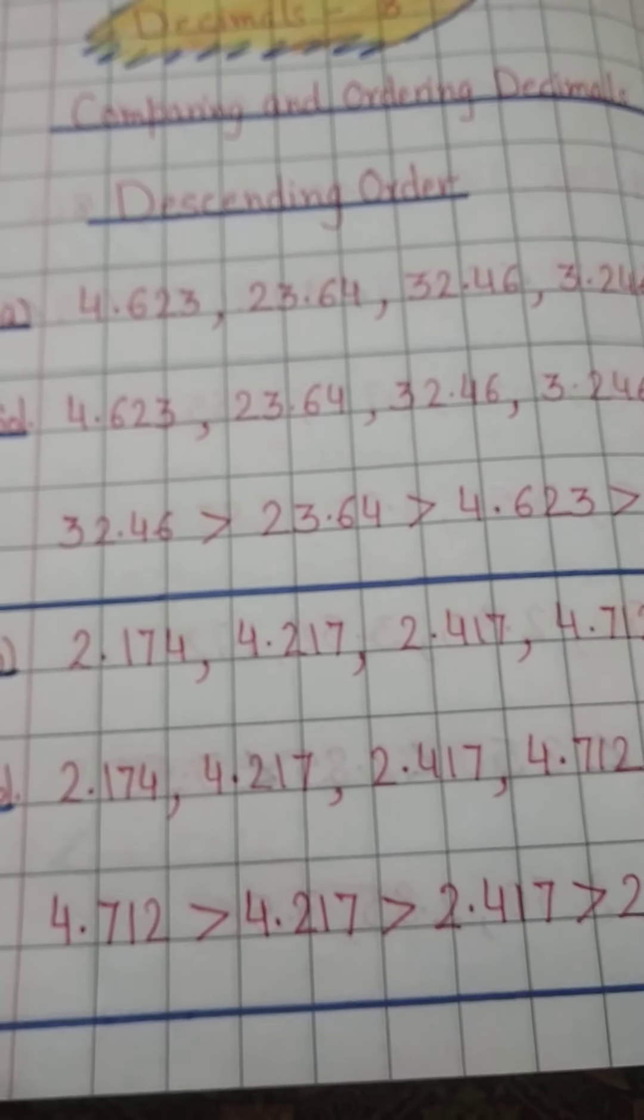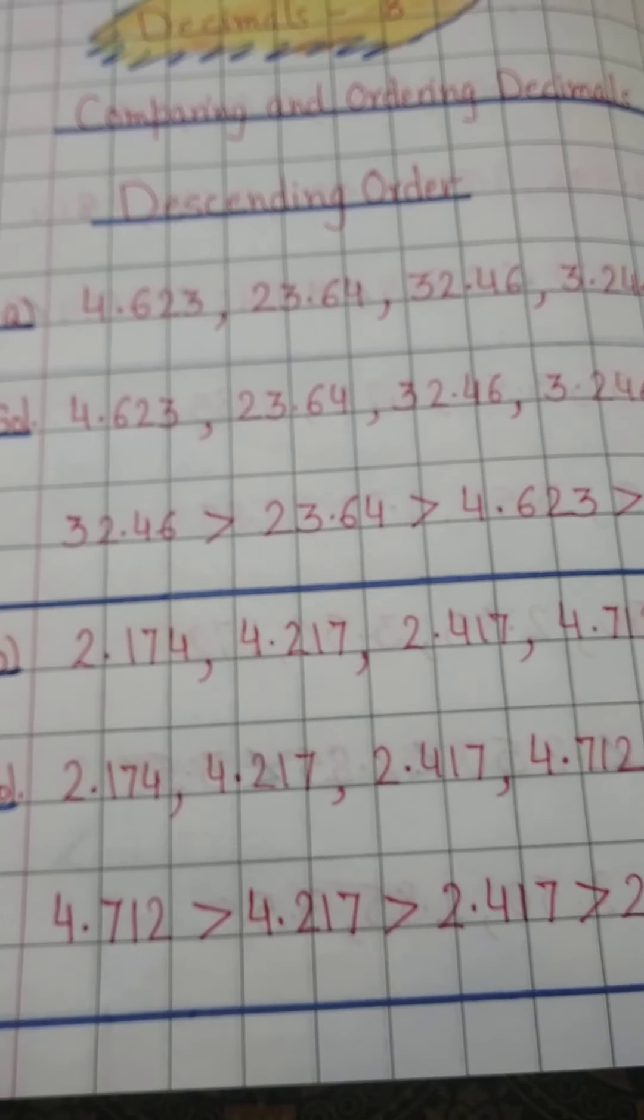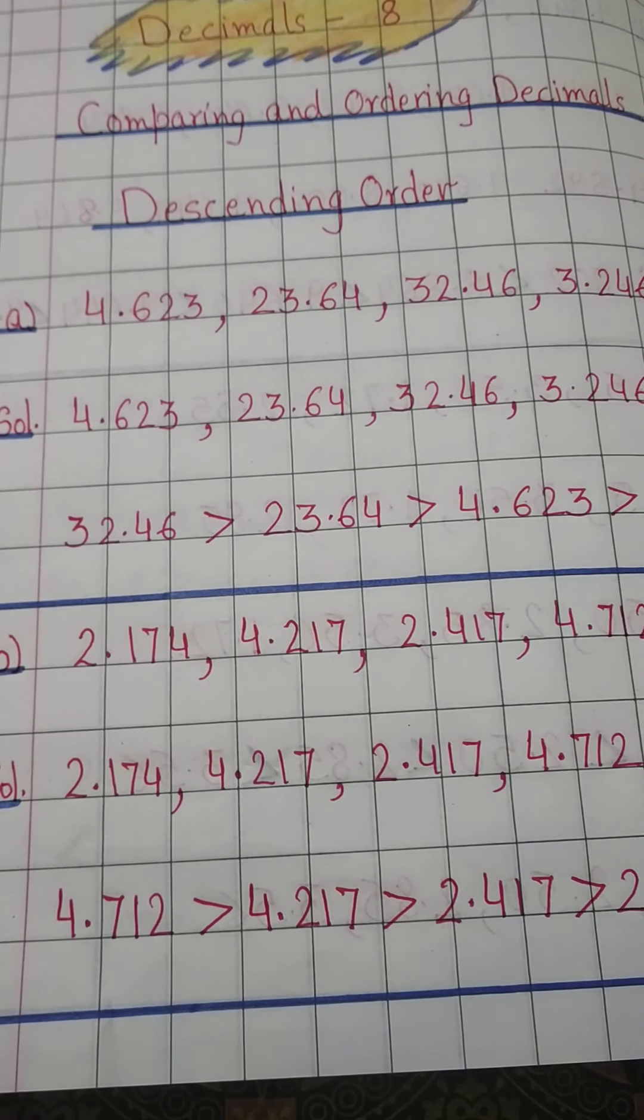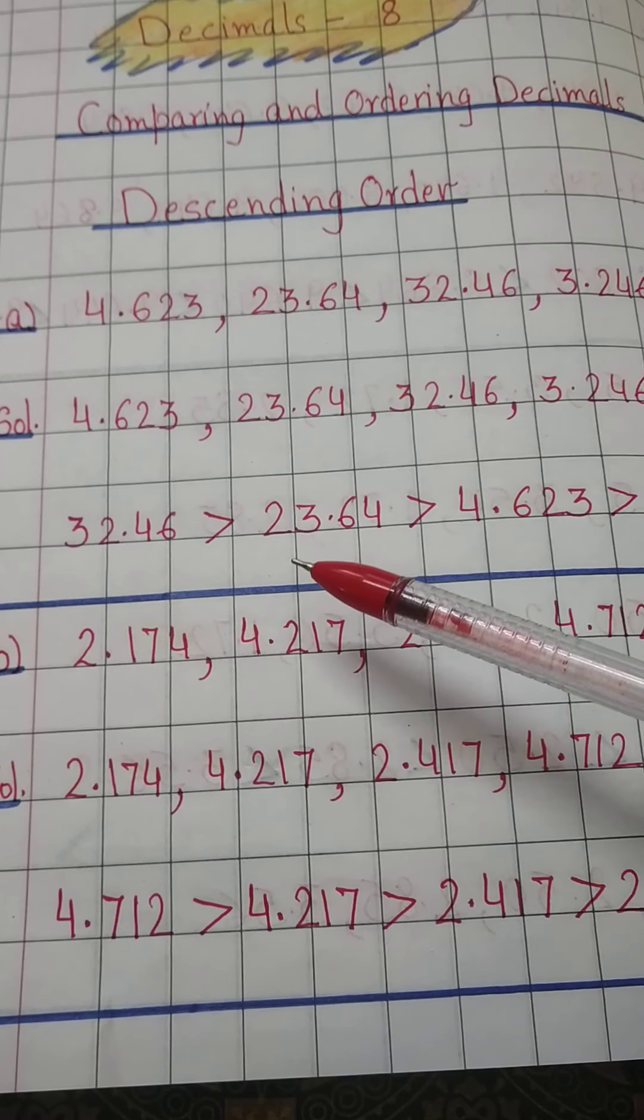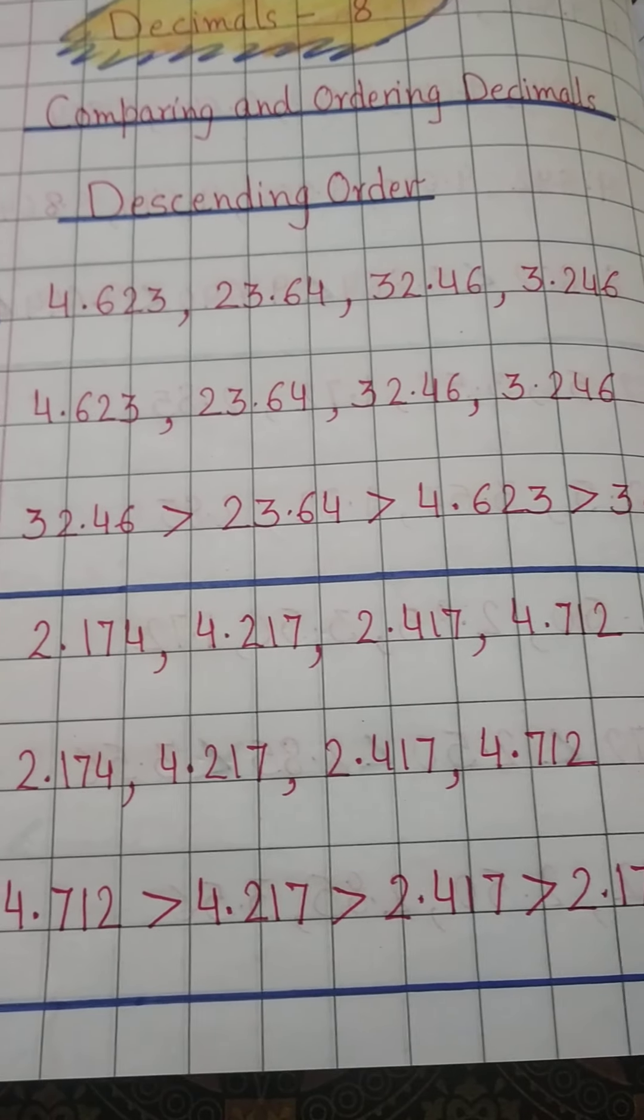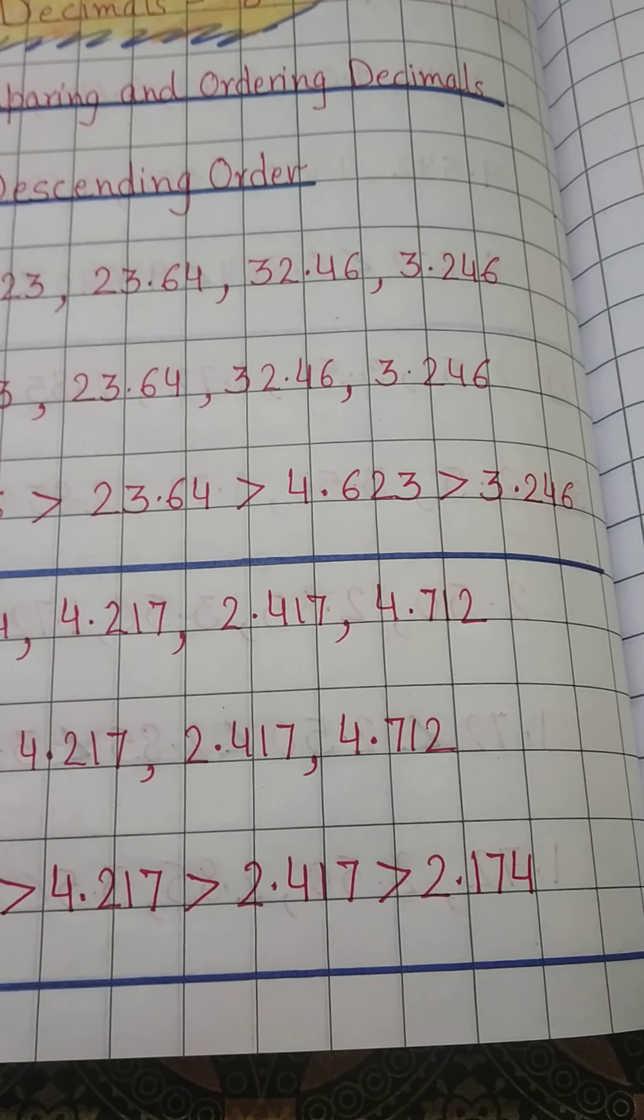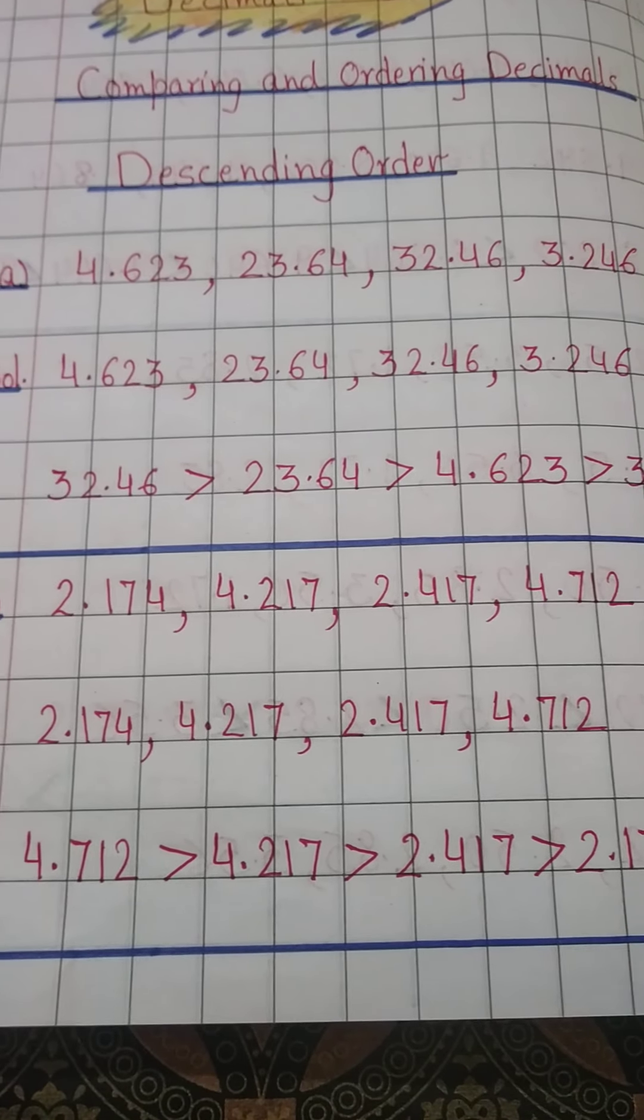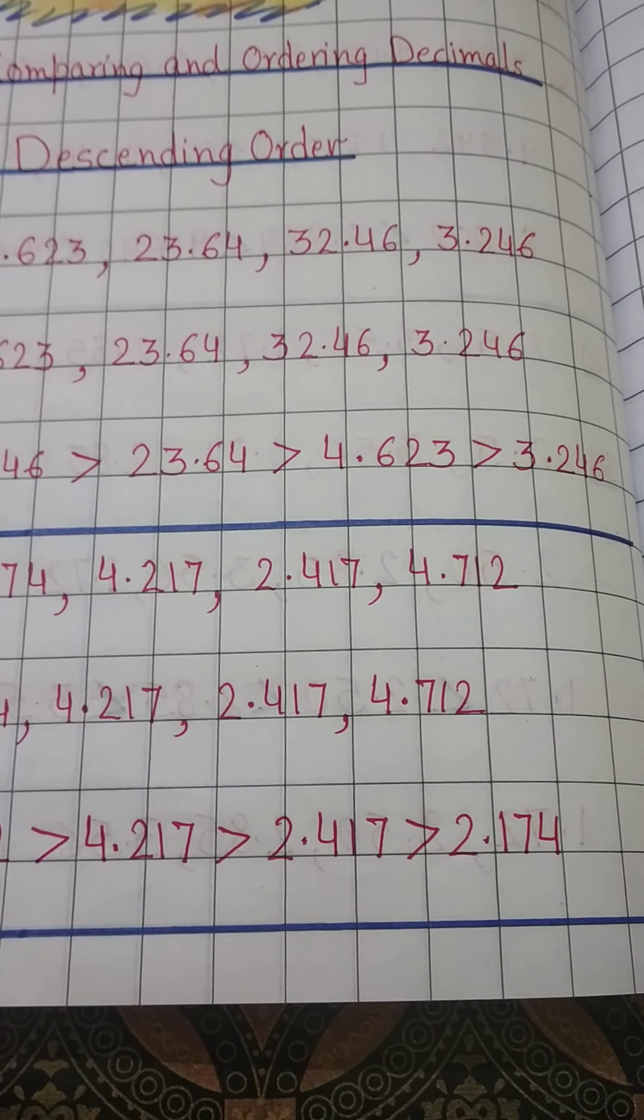I will write 32.46 is greater than, after this 32, we have 23.64, and is greater than 4.623. And the last is 3.246. So read each and every number and write it in descending order. This is the descending order. If you read 32, 23, 4, and 3, you can see the descending order.